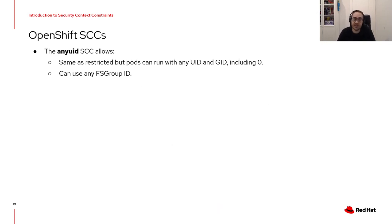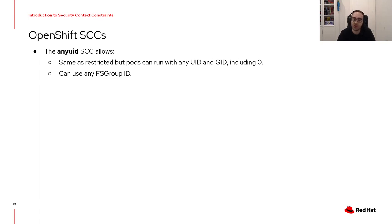The second is the anyUID SCC, which provides the same features as the restricted SCC but allows users to run with any UID and any GID. This means you can set in your pod configuration that your application runs as a specific UID, even as UID 0. If running as root, the container process is running as root on your node, both inside and outside the container. However, SELinux also plays an important role here, adding a layer of protection to the node.